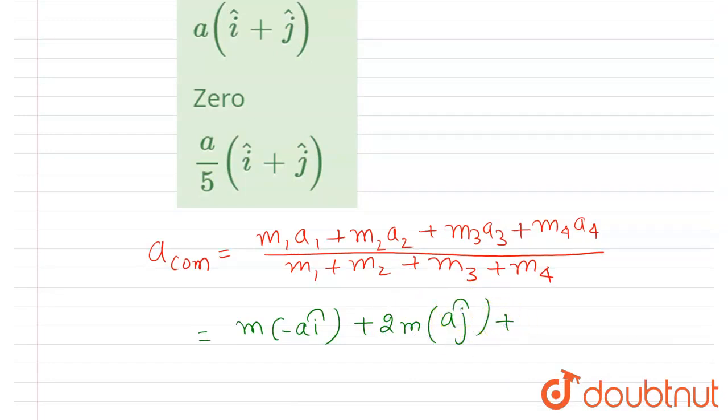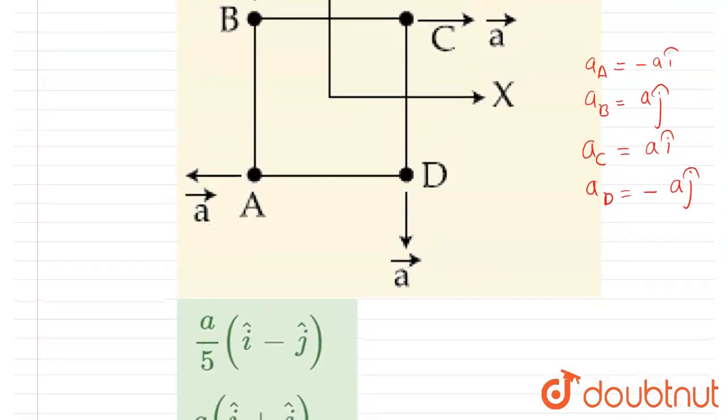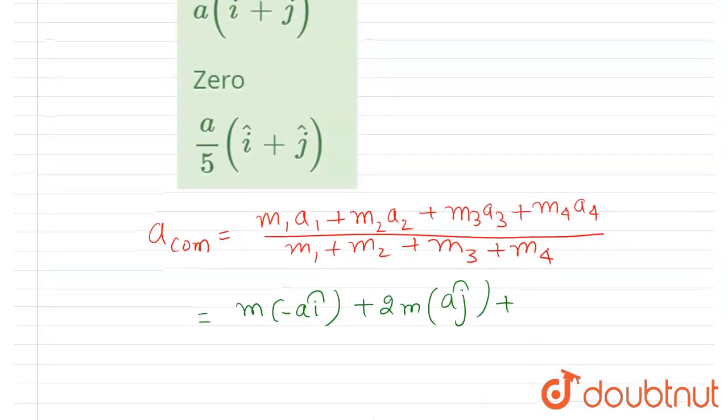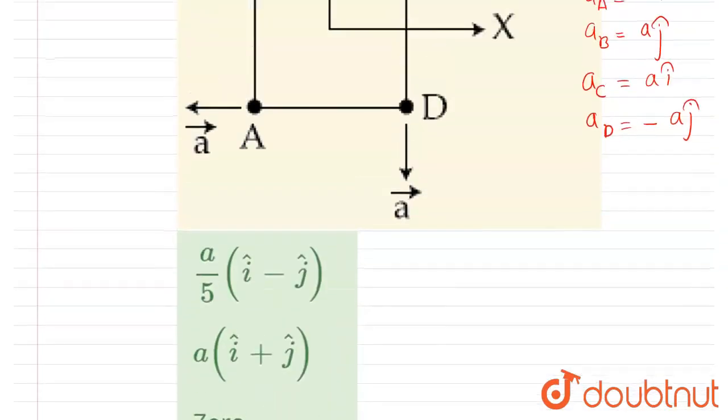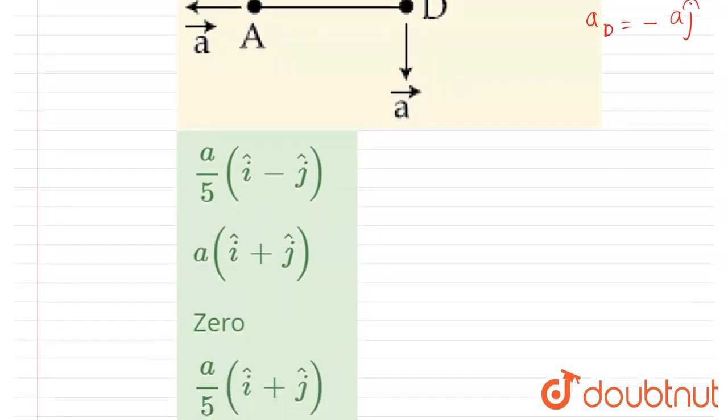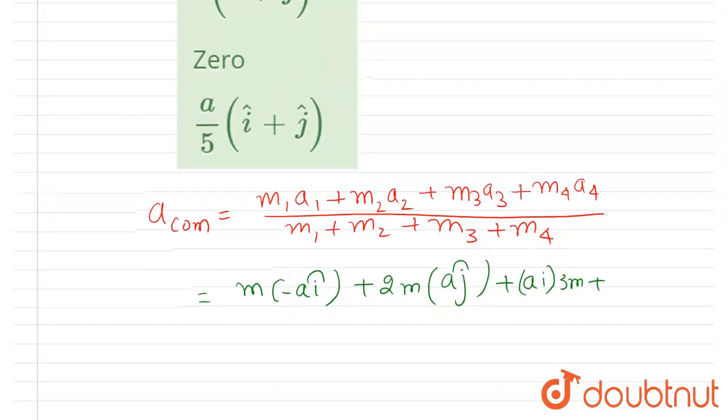Mass of particle C is 3m and acceleration is a î. And if I talk about the fourth particle, mass is 4m and acceleration is -a ĵ.